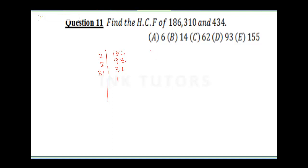For 310 — 2 can divide: 2 into 310 gives 155. What can divide again? 5 can go because when you sum the digits it's divisible. 5 into 15 is 3, 5 into 5 is 1. So we get 31 again — 31 into 31 is 1.